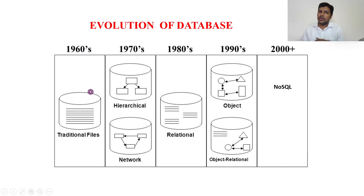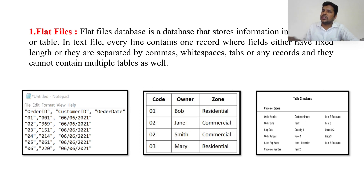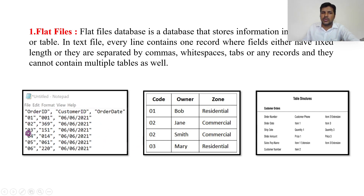The traditional file system is also called a flat file. A flat file database stores information in a single file. For example, if you open Notepad or WordPad, type some content, and save it — that is a flat file. Flat files typically use commas, white spaces, or tabs to separate data, and we can also use tabular forms. Each row in a flat file is called a record.